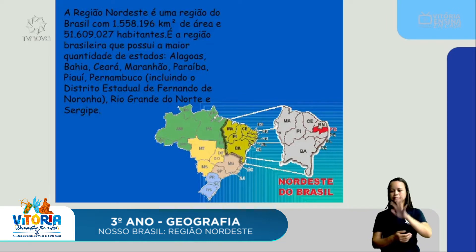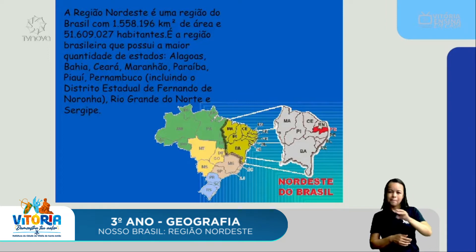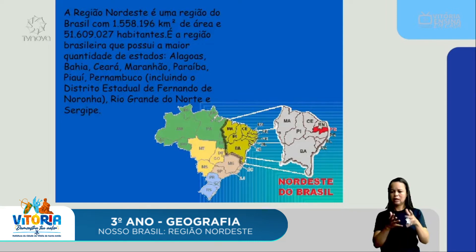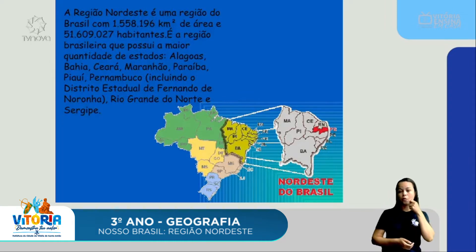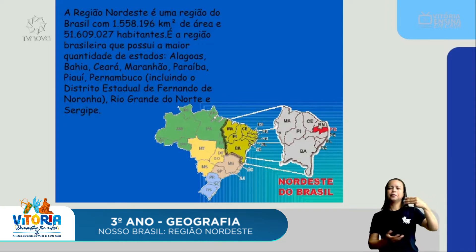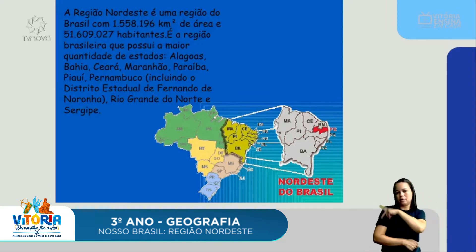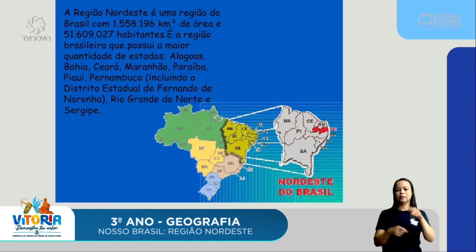É a região do Brasil com 1.558.196 quilômetros de área e tem mais de 51 milhões de habitantes. É a região brasileira que possui a maior quantidade de estados. Quais são os estados da região Nordeste? Temos Alagoas, Bahia, Ceará, Maranhão, Paraíba, Piauí, Pernambuco, e ainda inclui um distrito estadual de Fernando de Noronha, Rio Grande do Norte e Sergipe.